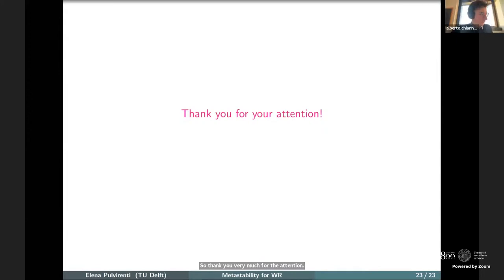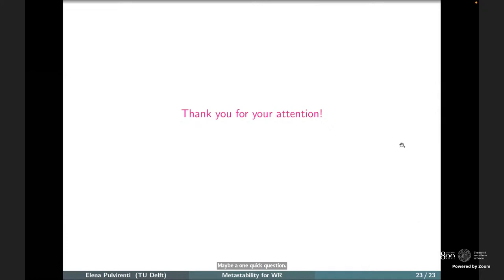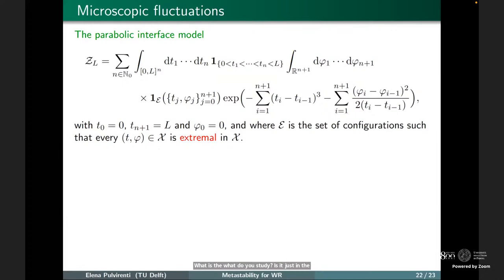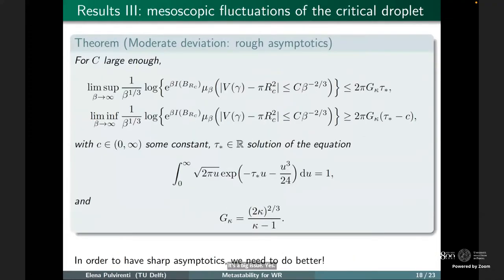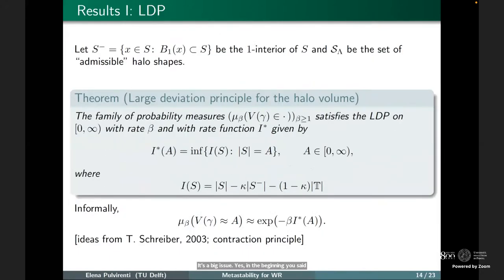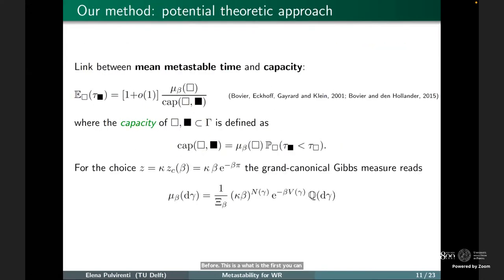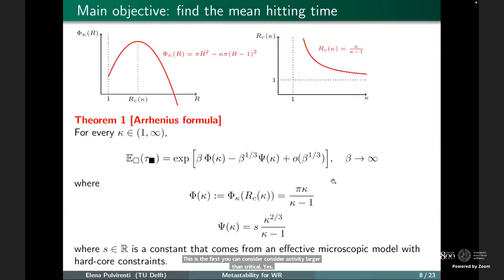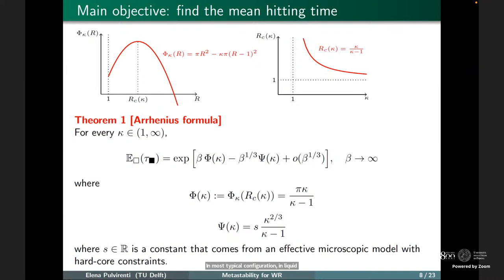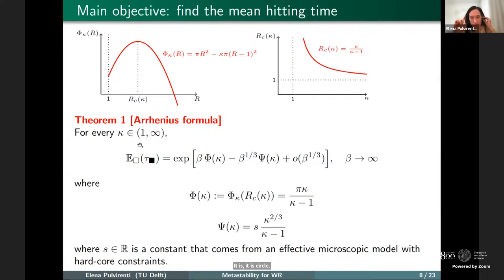In the Q&A, an audience member asks to see the main result again—specifically, what is studied and what the asymptotics are. The speaker confirms: the activity is chosen larger than the critical activity, and the main theorem gives the asymptotics of the mean hitting time. The audience asks about the typical configuration in the liquid phase, and the speaker clarifies that the theorem concerns the mean time to condensate.